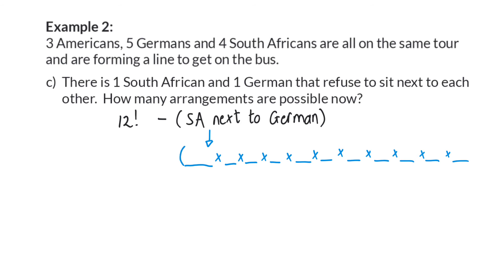If I then group the South African and the German together we have 11 tasks and that will give us 11 factorial options. This should then be multiplied by the group's factorial and we only have two people in the group so that will be 2 factorial.